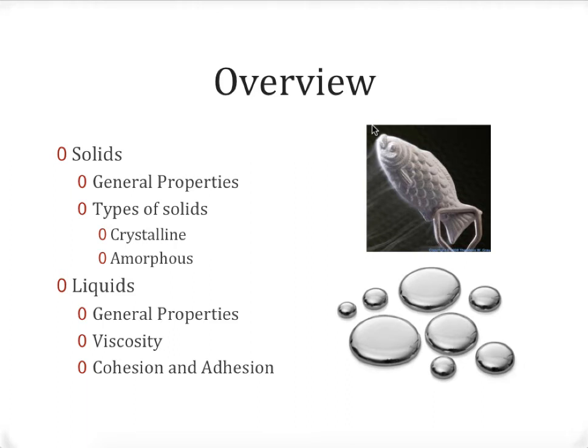Let's start with a general overview of what we'll be talking about today. We'll first start our discussion by discussing solids — their general properties, and then the different types of solids that we see around us. Those come in two forms: crystalline solids, which have regular repeating patterns in their structure, and amorphous solids, which do not. We'll have examples of each, as well as the differences in properties that go along with being crystalline versus not.